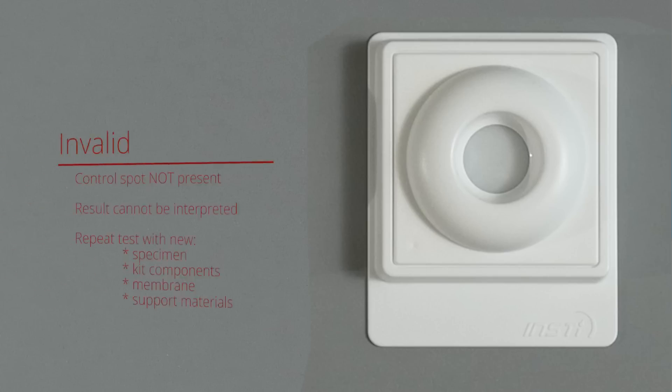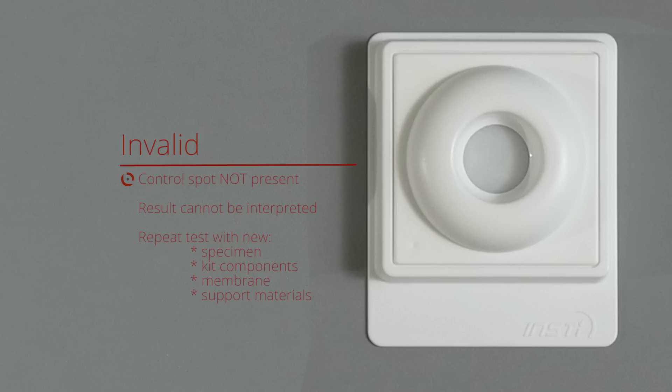Invalid result: the test is invalid if there is no control spot on the membrane. An invalid test result means that the test was run incorrectly or insufficient specimen was added. Invalid test results cannot be interpreted. Any invalid test should be repeated with a fresh specimen using a new membrane unit, kit components, and support materials.